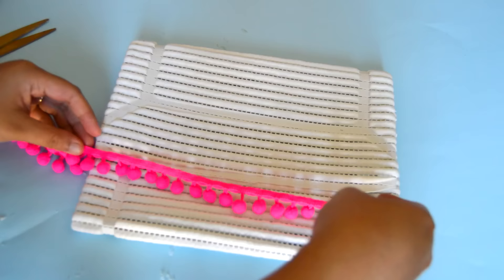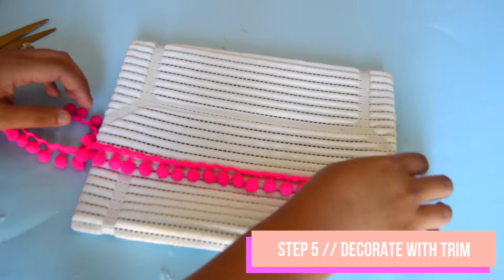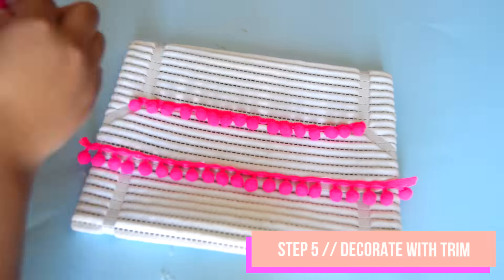I'm just using this pom pom trim because I had some left over from another DIY but you can definitely use any trim that you want. I think fringe will look super cute on this as well. To avoid burning yourself from the glue you can use the end of a pen or your scissors to press down on the trim to help bind.